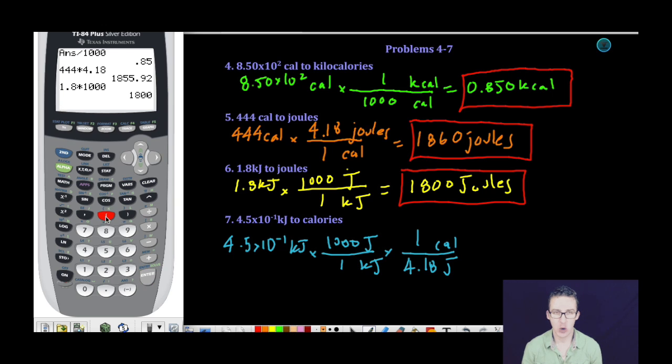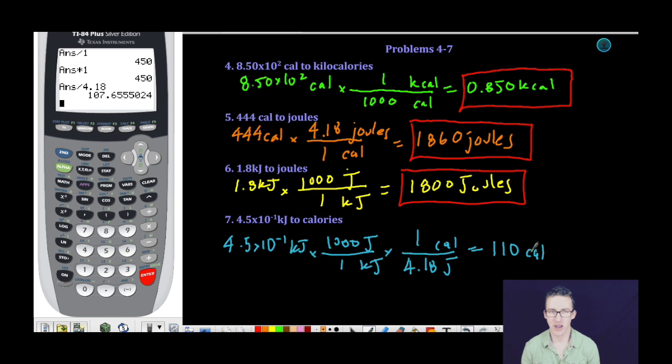Then in just a hop, skip over to my calculator, 4.5 second E, negative one, close parentheses, times 1,000, divided by one, times one, divided by 4.18. Gives us a value here of 110 calories when we round that to just two significant figures. And again, we want two significant figures because our initial measurement had two significant figures. And we are done.